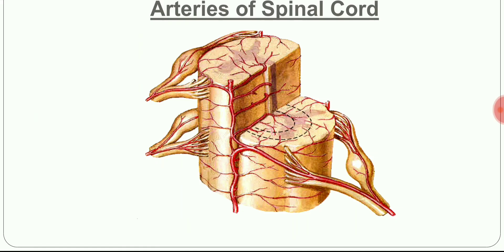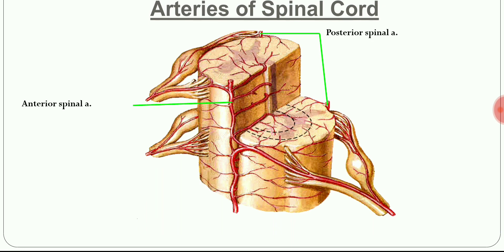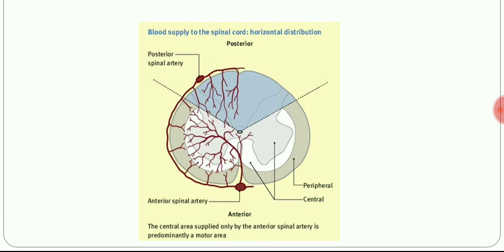Looking at the image, the anterior spinal artery is located anteriorly while the two posterior spinal arteries form an anastomosis. The radicular artery runs along the roots of the spinal nerves, supplementing the anterior and posterior spinal arteries. The anterior spinal artery supplies the anterior two-thirds of the spinal cord, while the posterior spinal artery supplies the posterior one-third.